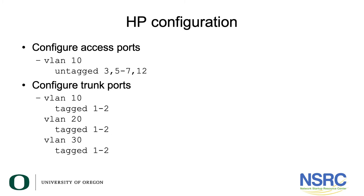Now let us look at an alternative configuration from HP. To configure either an access or trunk port, you do not go port by port. Instead, you go to the VLAN configuration and tell it which ports that VLAN should be untagged on (for access ports) and which ports it should be tagged on (for trunk ports). You haven't mentioned the terms access or trunk, but it will generate 802.1q tagged frames for the tagged ports. This configuration is compatible with the equivalent Cisco configuration.